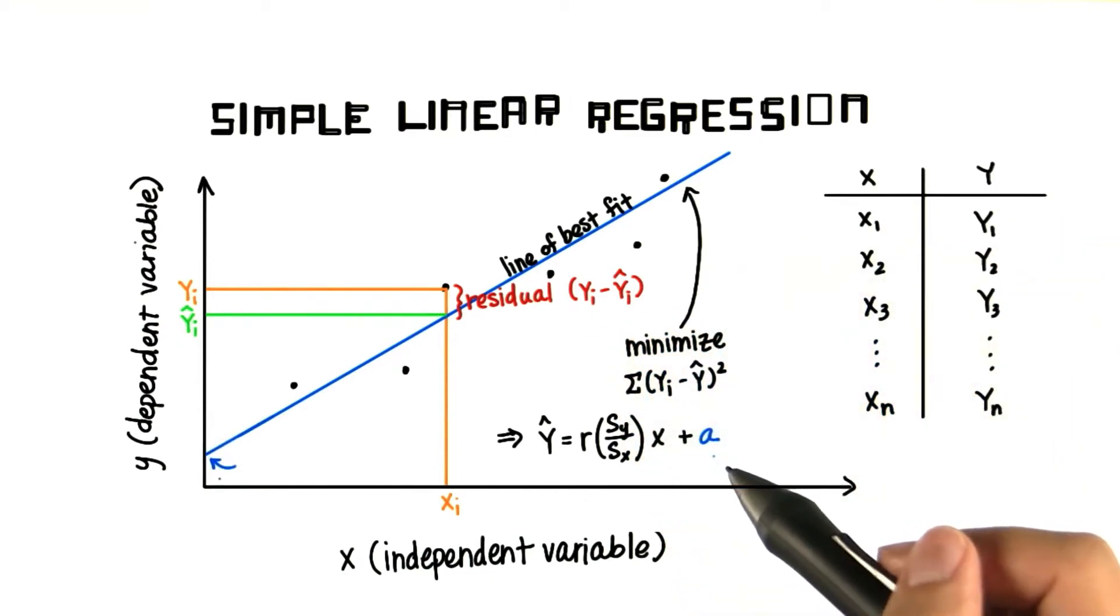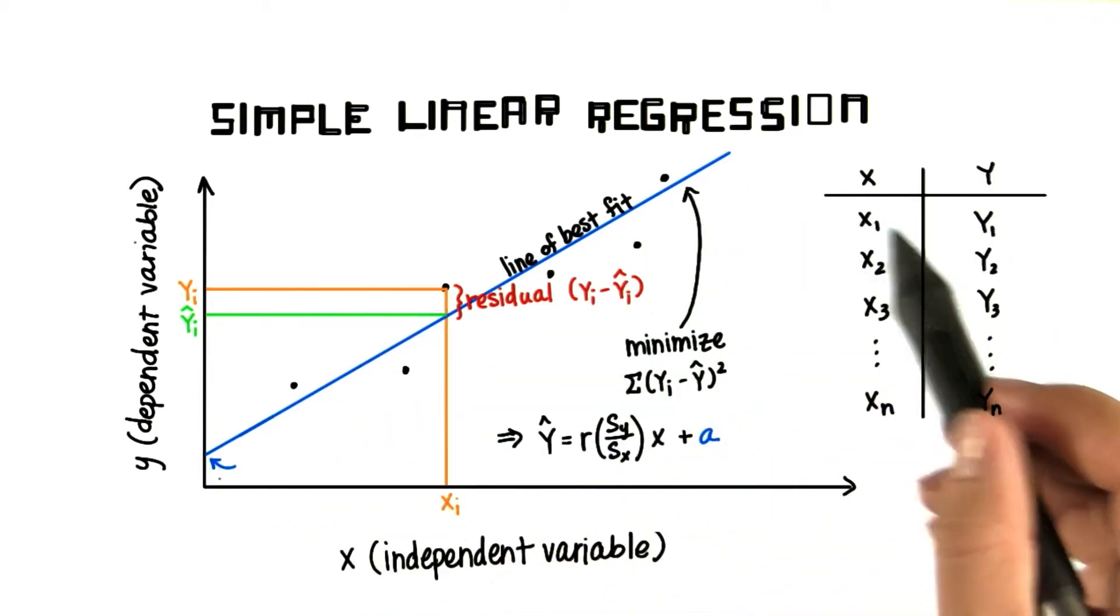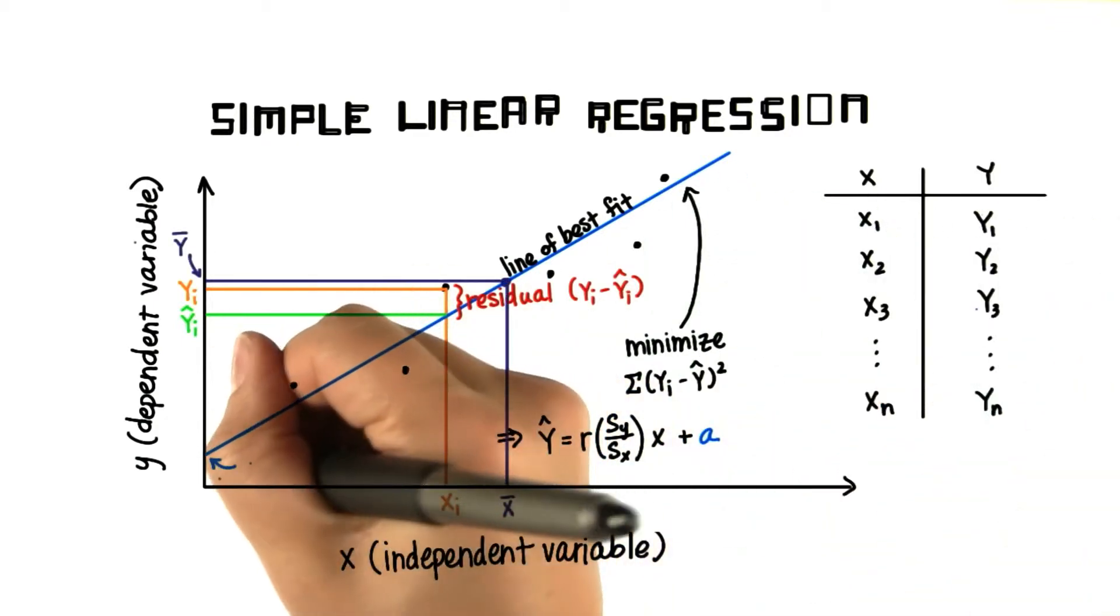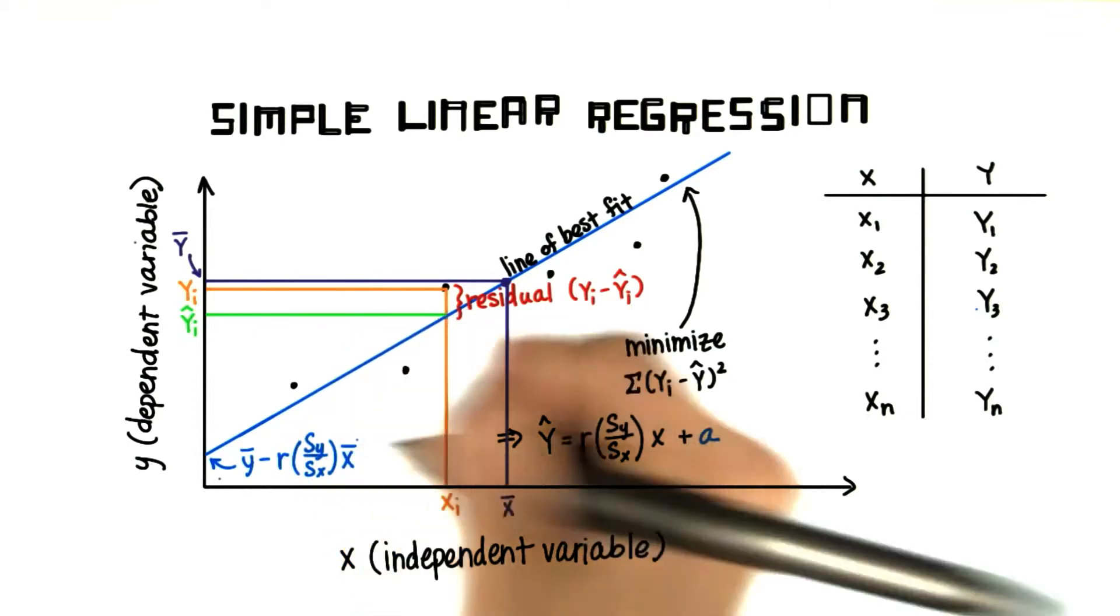Plus our y intercept. Since we know that our line of best fit goes through the mean of x and the mean of y, then we know the y intercept is equal to the mean of y minus the slope, times the mean of x.